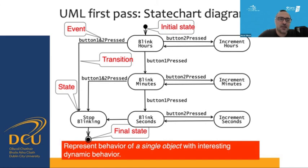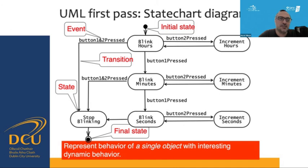Here is a state chart diagram, which is different from the other formations but still covers the same watch. The initial state is represented as a black dot, and 'blink hours' is the first state. When we press button two, it increments the hours — there is a two-way communication. Pressing buttons one and two takes the diagram to the 'stop blinking' state. Pressing button one again lets us blink the minutes, and one more press of button two increments the minutes. Pressing button one again transitions to 'blink seconds', and pressing button two increments the seconds.